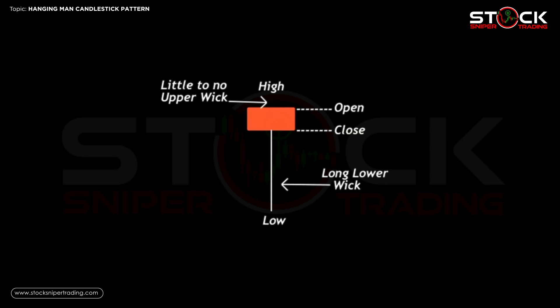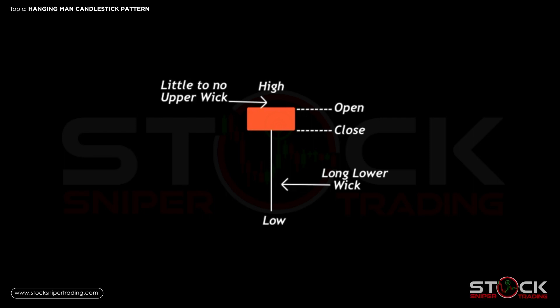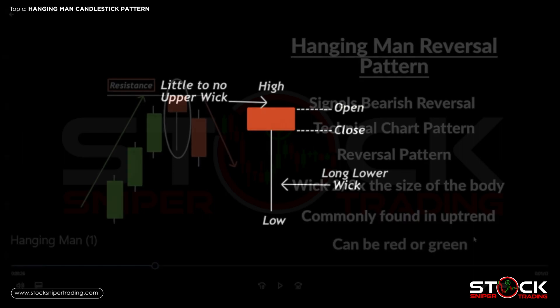When our bearish candle opens, there is a lot of selling pressure which pushes the candle down where it makes a low of the period, illustrated by the long lower wick. But it does encounter buying pressure during the time frame, where buyers push it up before the candle closes. The close is below the open, so it is still bearish in nature, but we do have some buying volume still left. We need additional bearish candlesticks for confirmation in order to take a sell position.